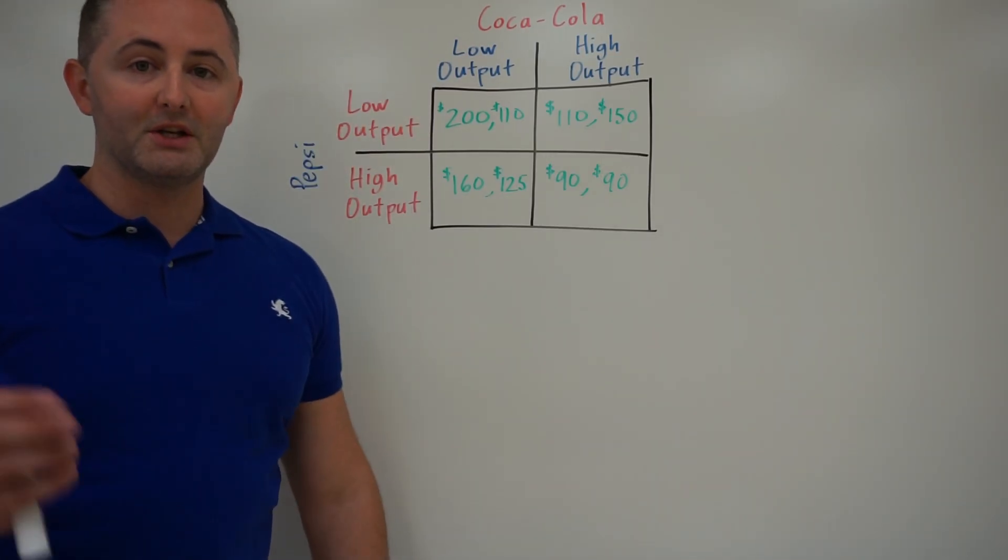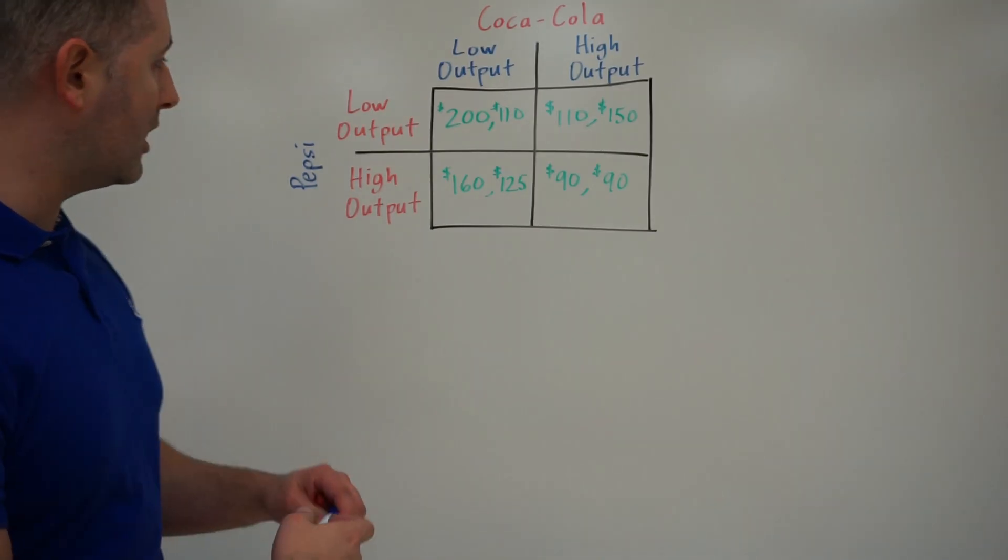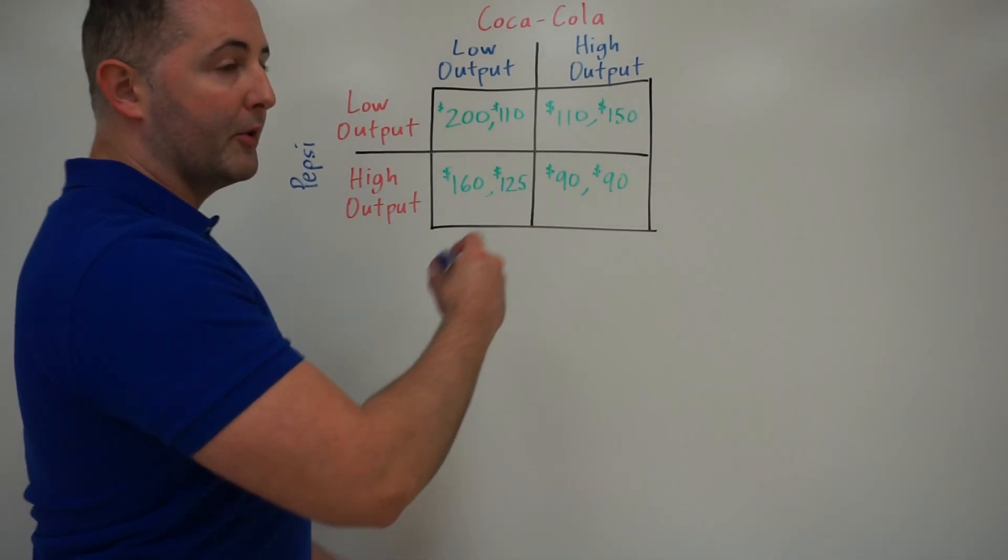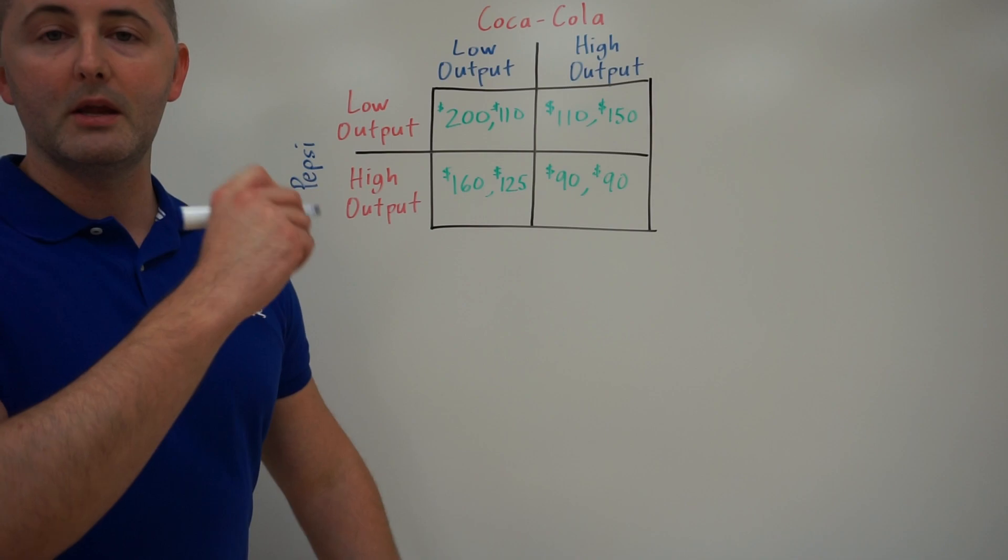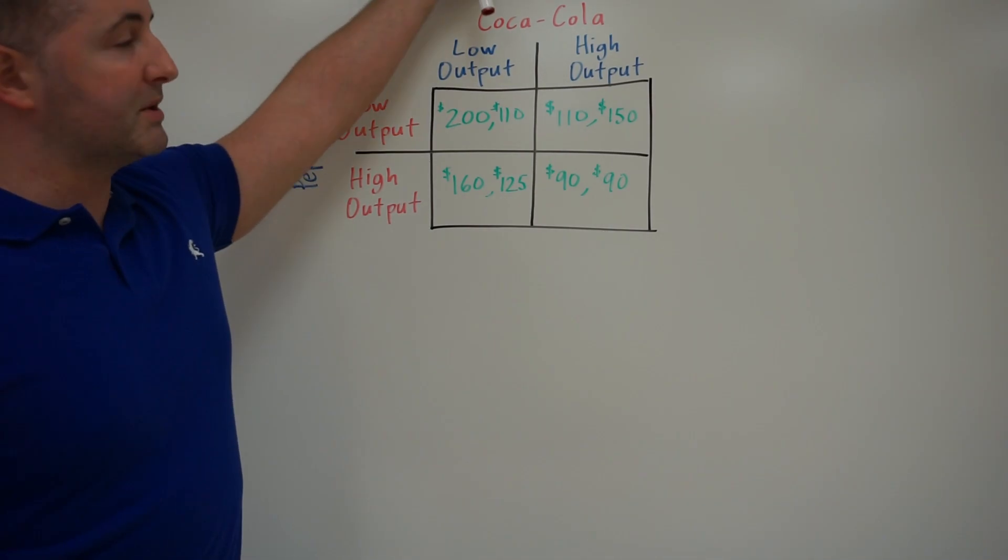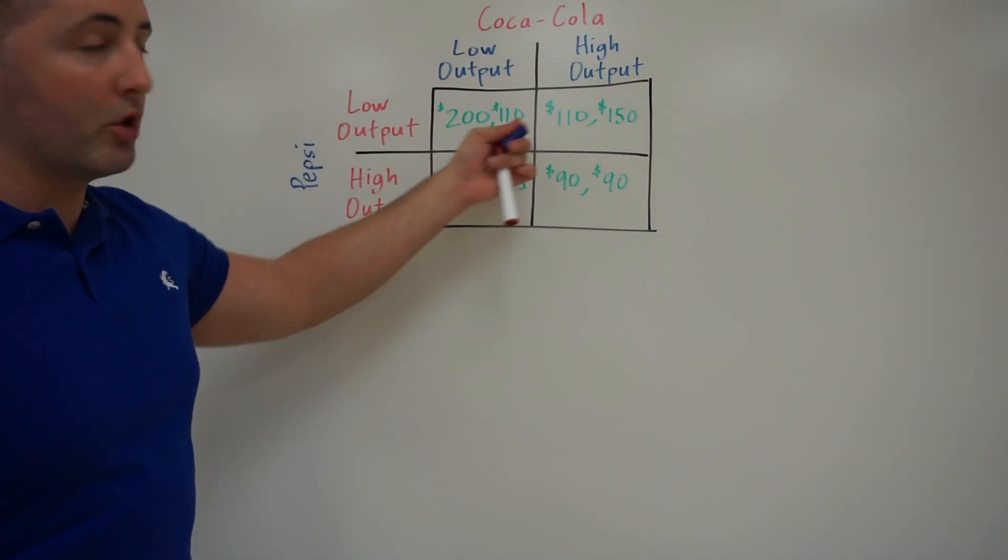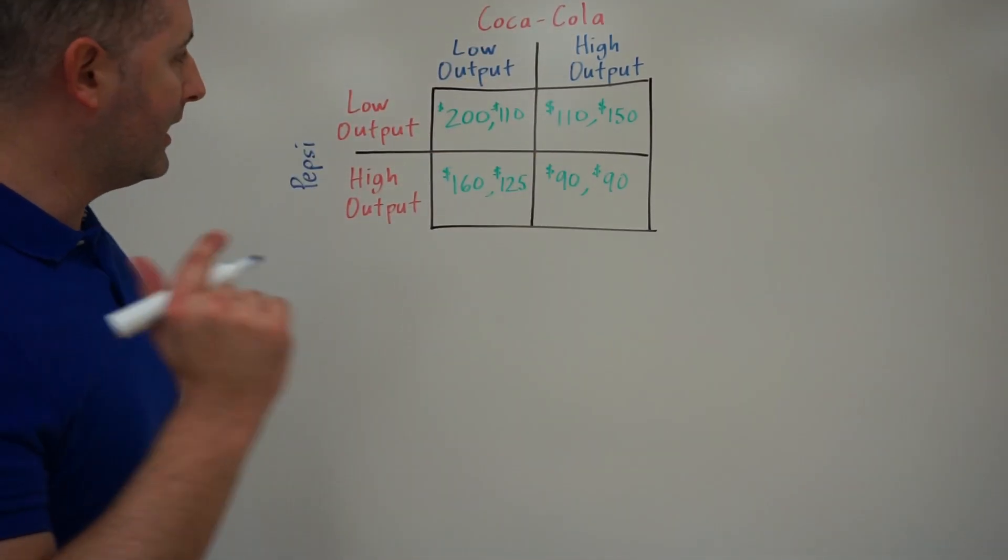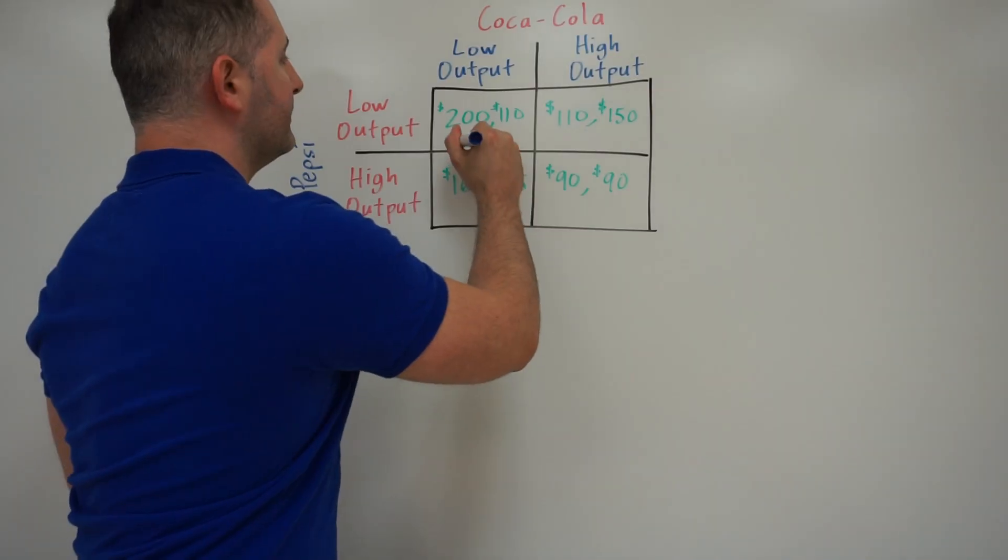Now, the important question is, which is which? So to help us out here, I'm going to put the letter P or the letter C. Letter P represents Pepsi. So that's Pepsi. That's going to be our horizontal axis. I'll put the letter C for Coca-Cola. That's our vertical. So this will apply in every payoff matrix that you do.